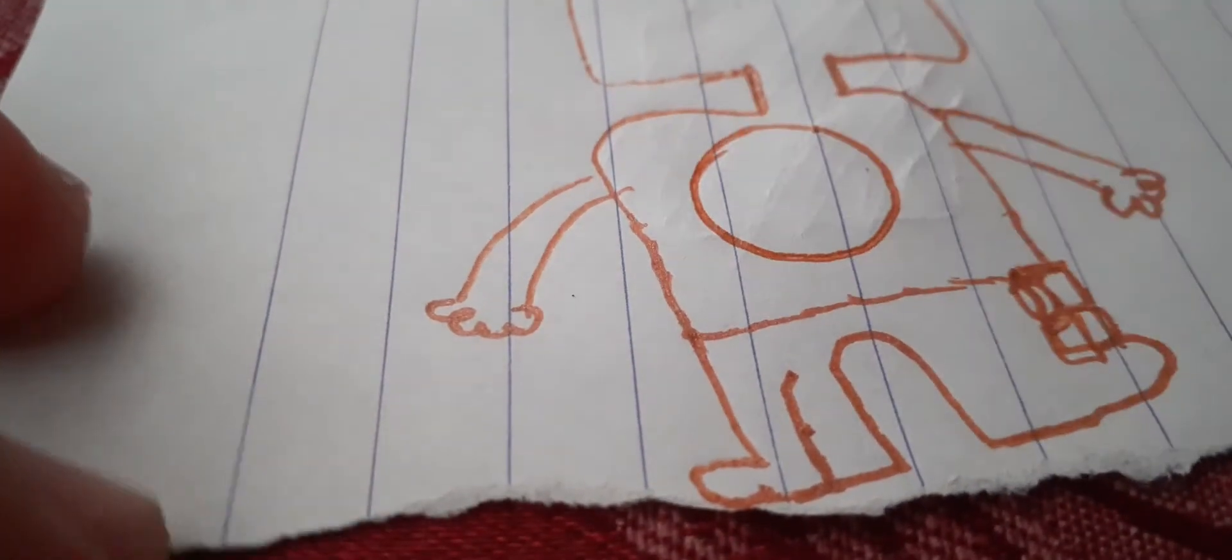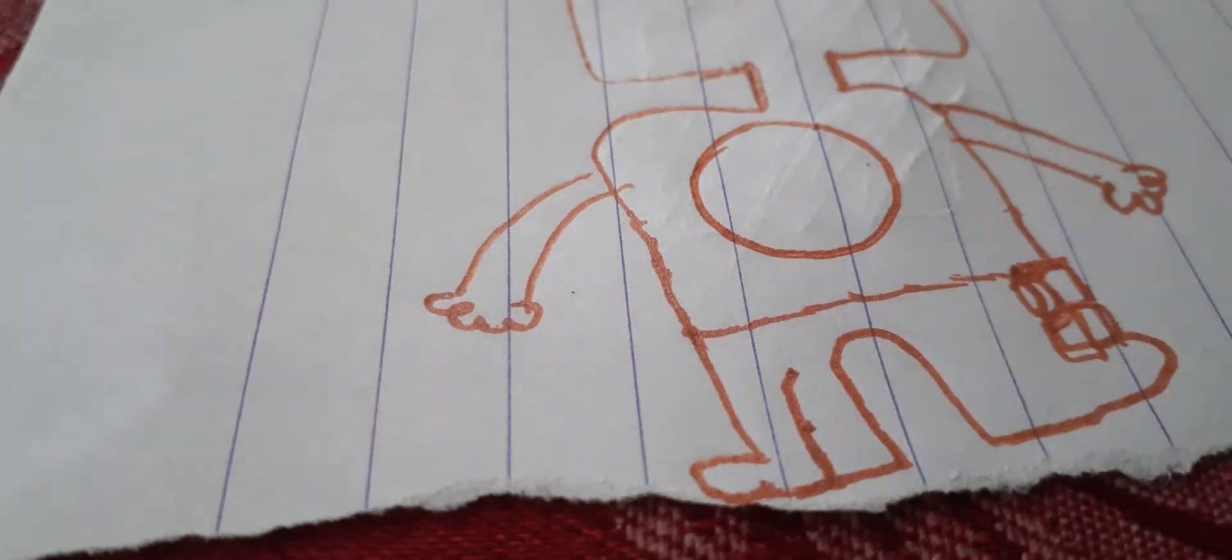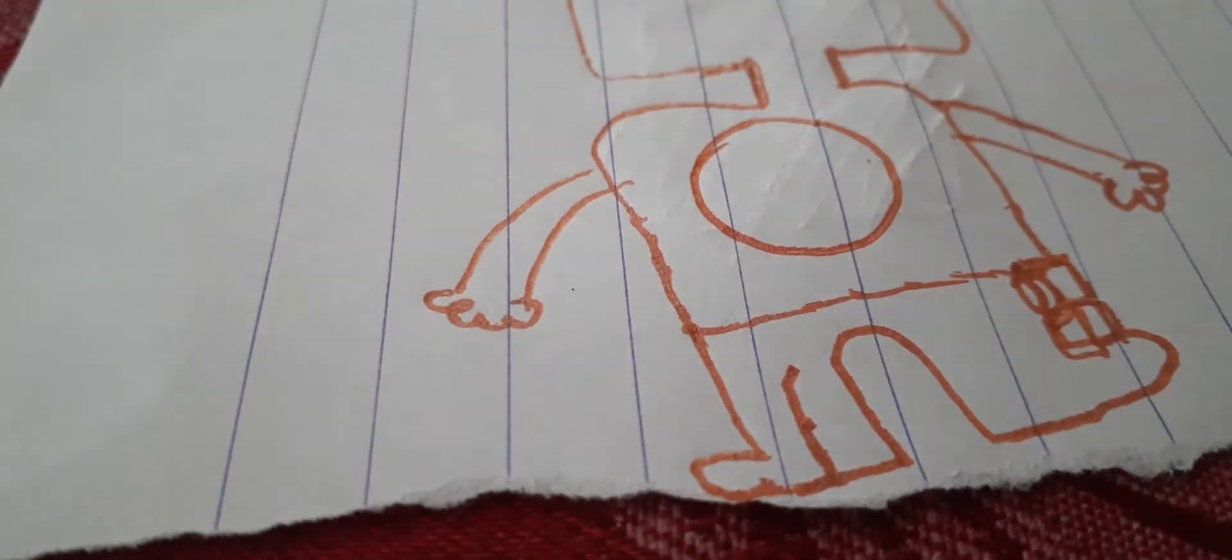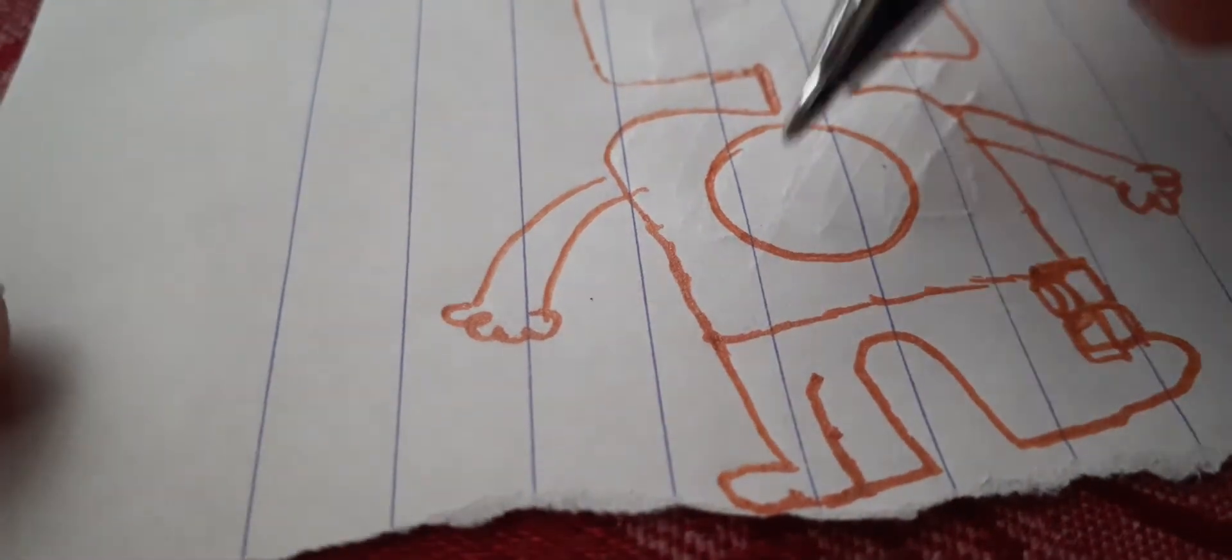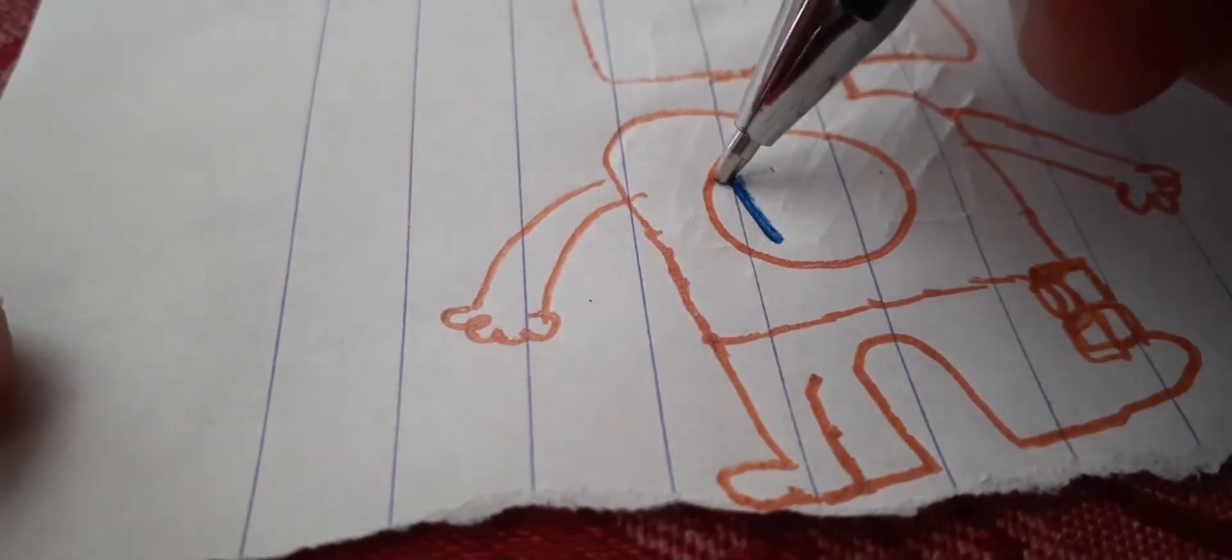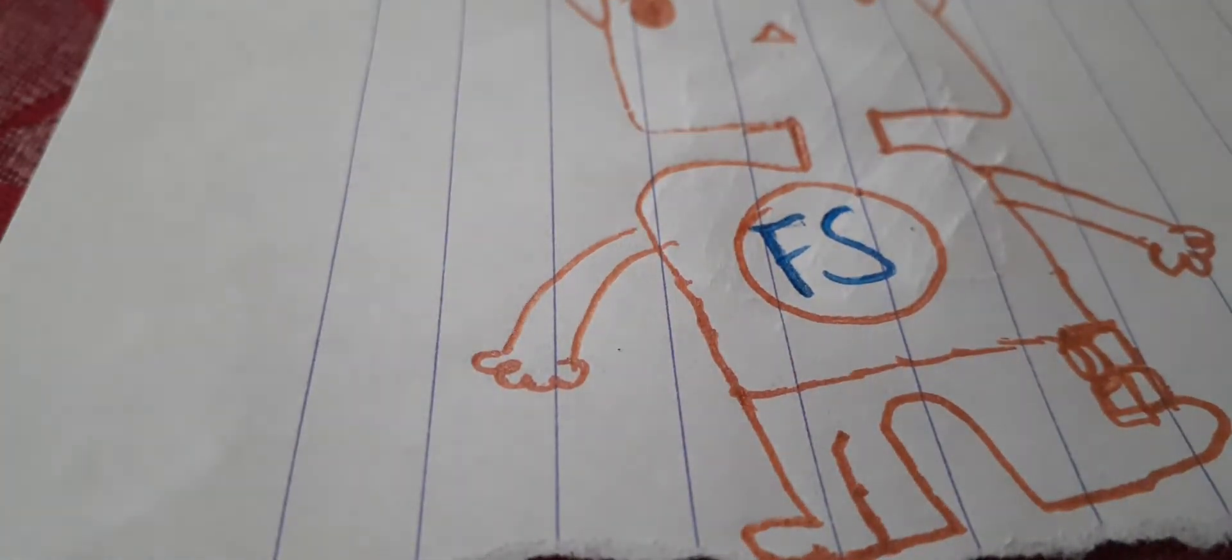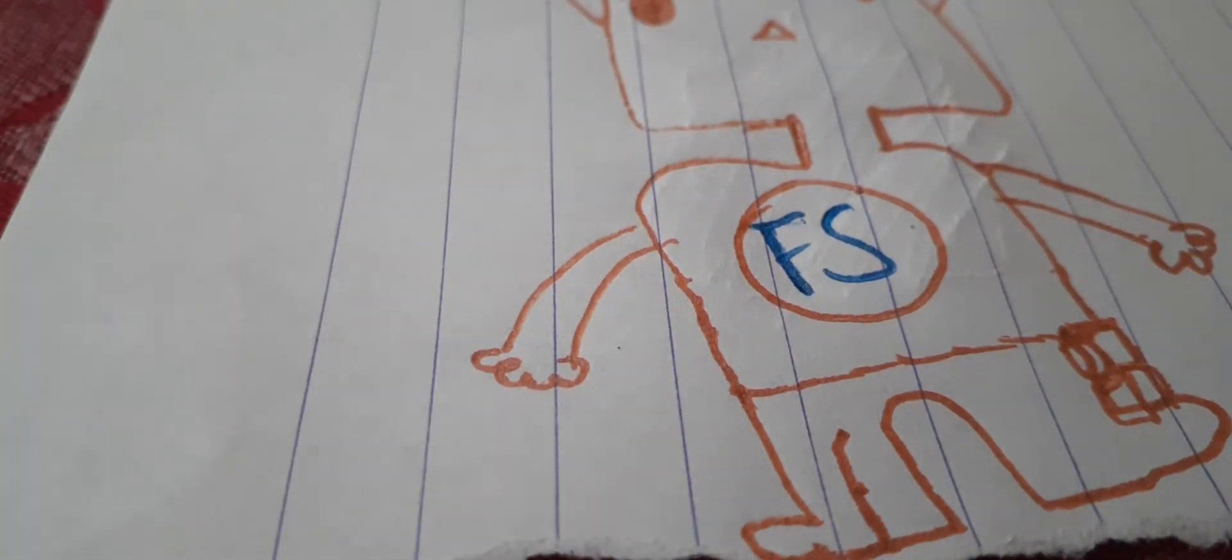And then we're going to draw something on the t-shirt, and we're going to do maybe blue. And we're going to write maybe Funko Star. There we go, just stand for it. And yeah, so I think that's it.